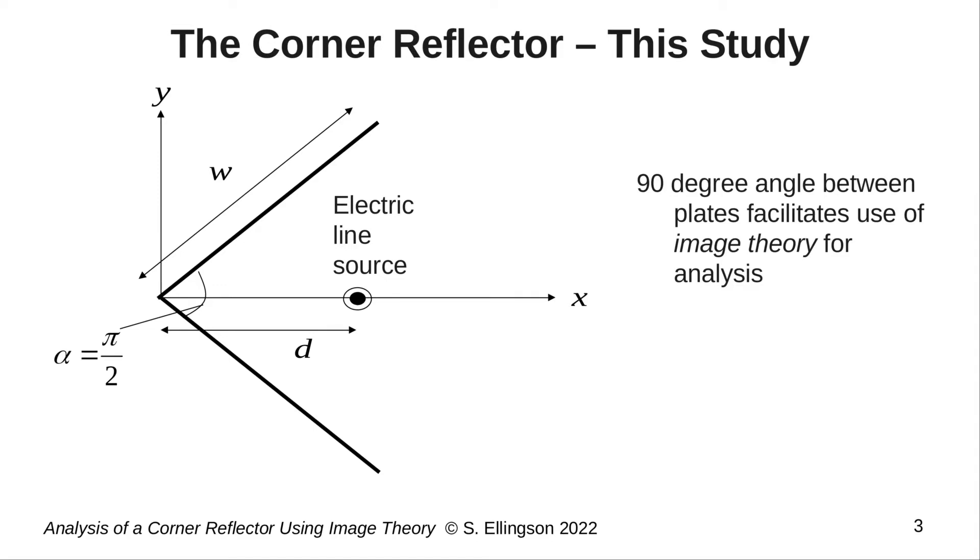In this study, we're going to analyze a special case in which alpha, that angle between the plates, is 90 degrees. This is going to let us invoke image theory, and you knew that was coming from the title of this lecture.